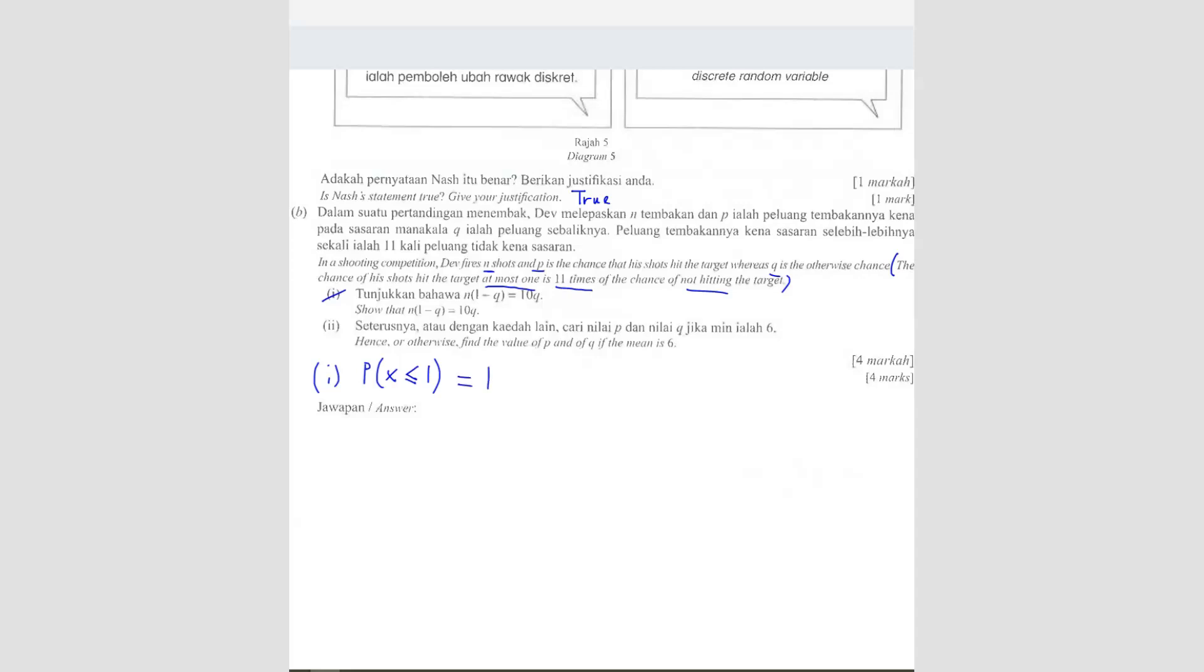The probability of him hitting the target at most one is... So 'is' means equal, 11 times the chances of him not hitting. So the probability of not hitting. You must form this equation. Only then you can solve. Otherwise, it'll be hard to prove this one here.